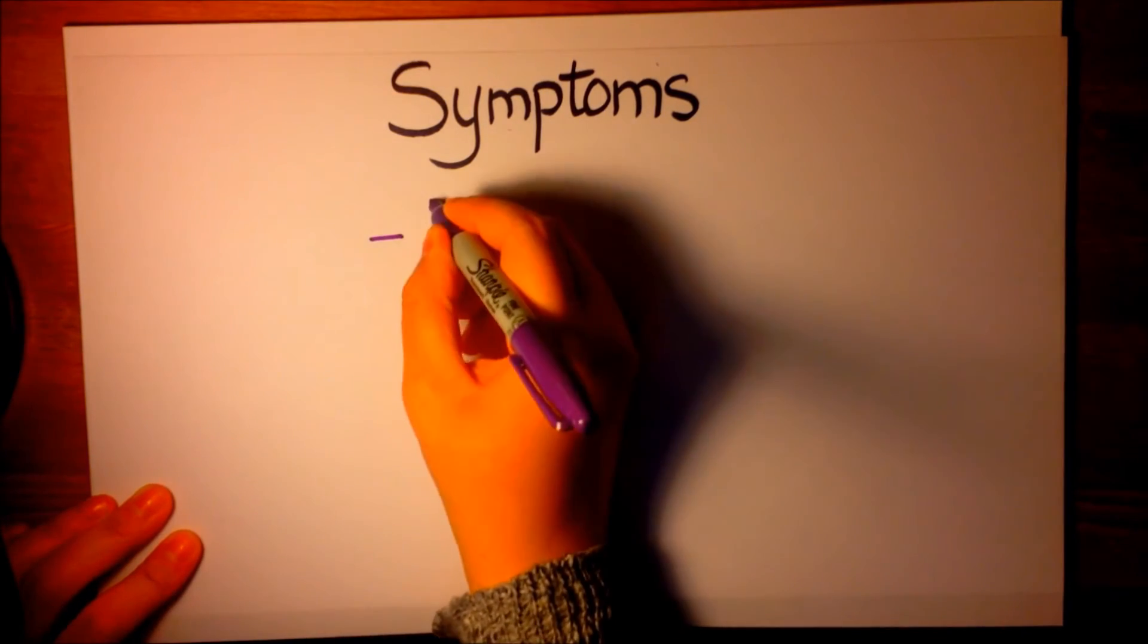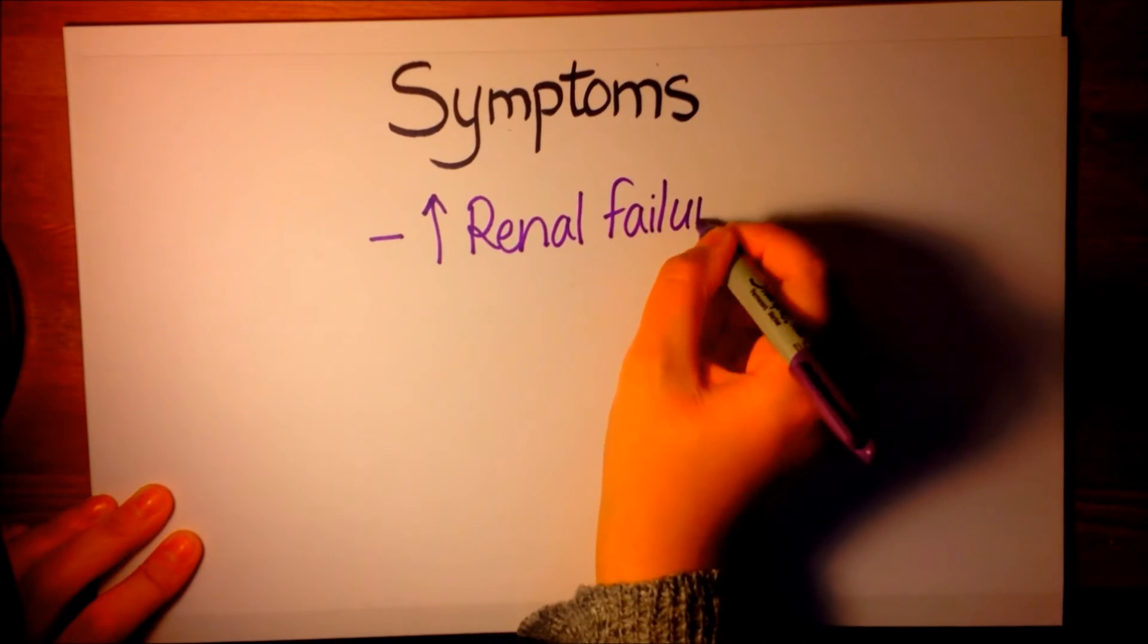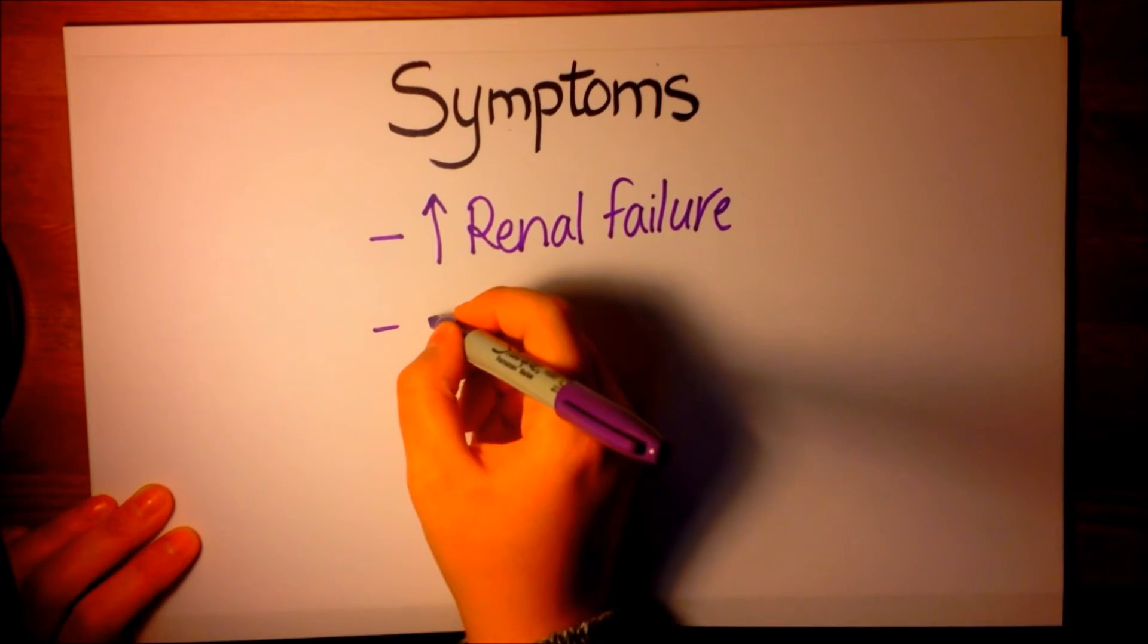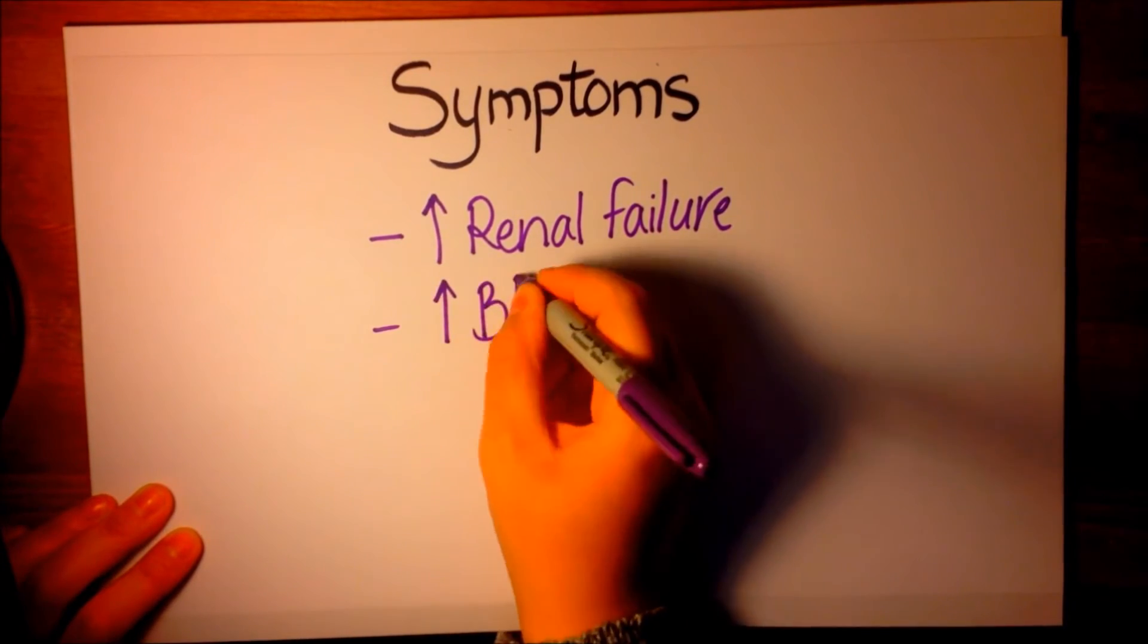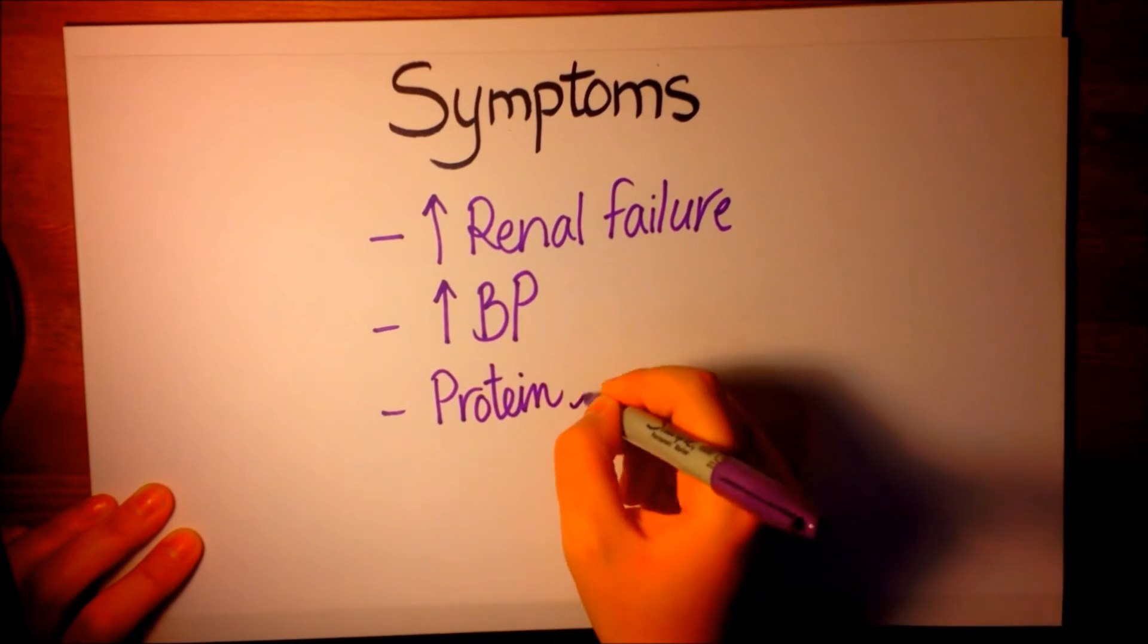Scleroderma renal crisis is characterized by the acute onset of renal failure, the abrupt onset of high blood pressure, and a urine sample that shows mild presence of proteins.